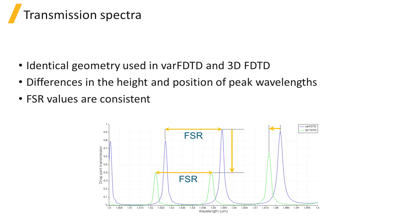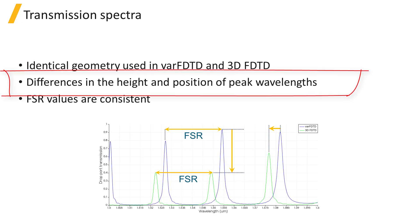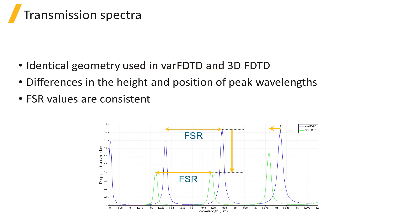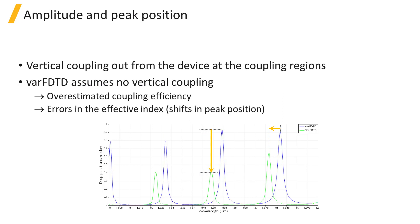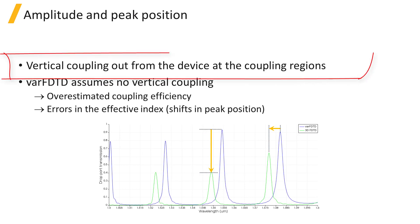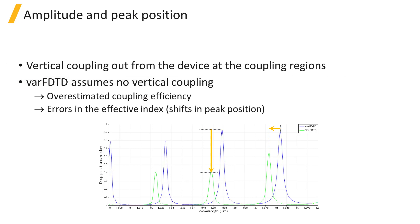You can see that the height and wavelength of the peaks in the spectrum are shifted; however, the free spectral range is consistent between the two. The differences are because there is some vertical coupling out from the device at the coupling regions between the straight waveguide and ring.